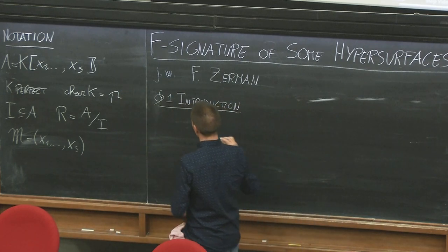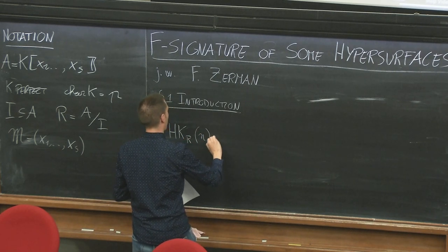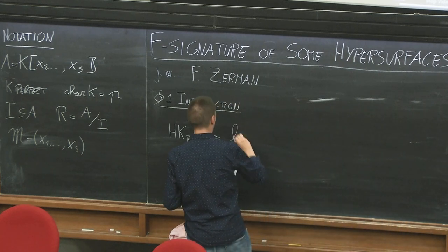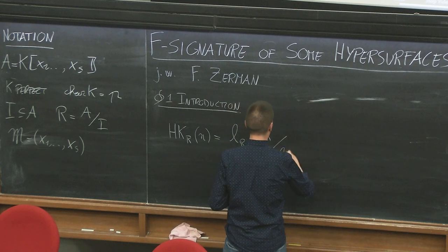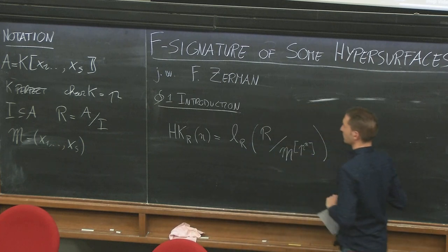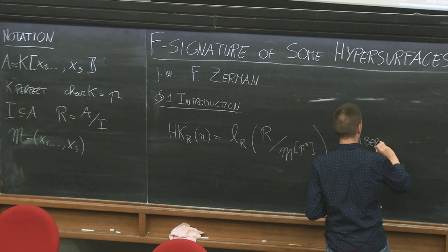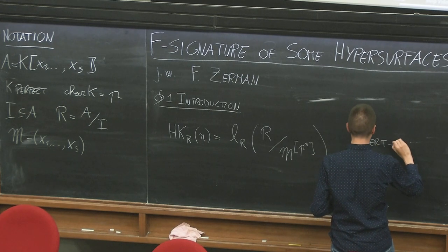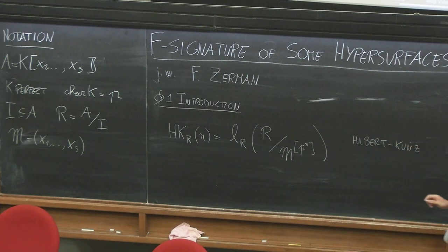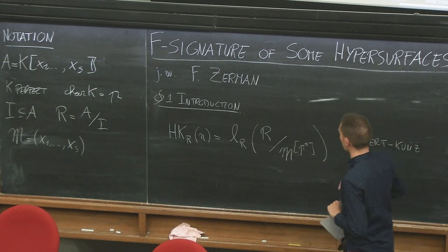We start with the Hilbert-Kunz function, which I will denote by HK_R of N, where N is a positive integer. This is nothing but the length of the quotient of R modulo the Frobenius powers of M, M^{[p^N]}. This is the Hilbert-Kunz function, which has been already introduced in previous talks, and was studied first by Kunz, who took as a model the Hilbert-Samuel function — here we take Frobenius powers instead of ordinary powers of the ideal.